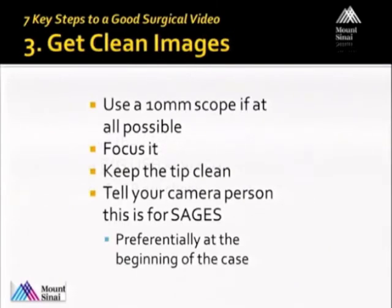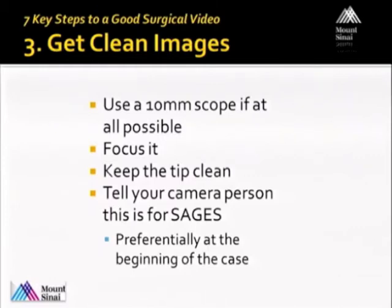Point number three: you need to get clean images. This seems pretty obvious, but it's amazing how many videos get submitted to SAGES where there's a big glob of blood on the side of the lens — and that's not going to get accepted. So even if you normally use a 5 millimeter scope and get a great image, if you're going to make a video specifically for submission to SAGES, you might want to use a 10 millimeter scope. It's going to be brighter, less susceptible to getting smeared with a little piece of fat or blood, and it's going to give you generally a better image. Make sure it's focused and the tip stays clean, and if the tip gets dirty, take it out and clean it.